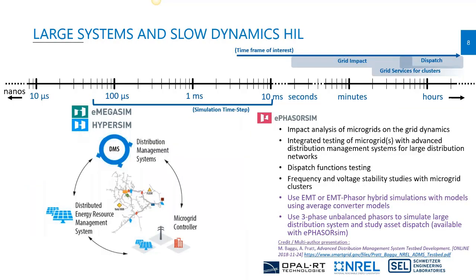For large systems and slow dynamics HIL testing, you test microgrids or clusters of microgrids within a large power system to study whether they can provide grid services using an aggregator. It is also possible to simulate large distribution networks with three-phase unbalanced networks when studying slow dynamics. eMEGASim and HyperSim provide EMT-type simulation, and ePHASORSim enables phasor-domain simulation — balanced or unbalanced — which is particularly useful for running large distribution systems in real time.